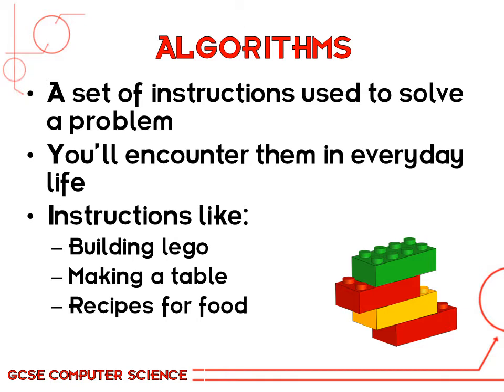You'll have come across what we'd call algorithms in real life. For example, if you've ever followed a set of instructions to make some Lego, or built a table or a chest of drawers, or followed a recipe for making a meal or a dessert — they are all classed as algorithms because you're following instructions to solve a particular problem.